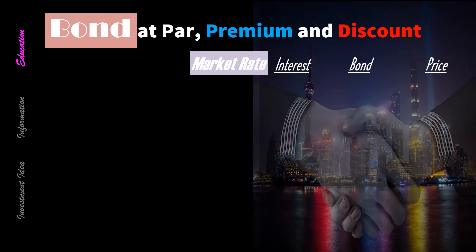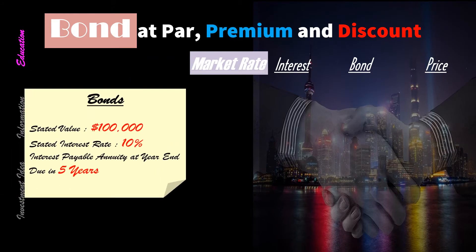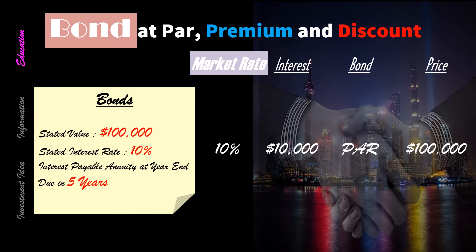Now we're going to discuss par, premium, and discount bonds. Let's pretend that you have $100,000 to invest in a bond. We're going to buy a bond for $100,000, the stated rate is 10%, and the term is 5 years. The interest each year will be 10% of $100,000, or $10,000 of interest a year for 5 years. When the stated rate is equal to the market rate, the bond will be traded at par, which just means that the amount that you invest — $100,000 — will be the same as the face value.